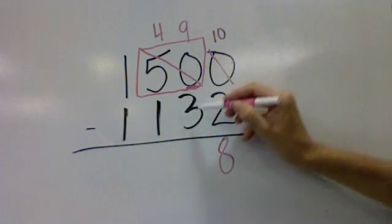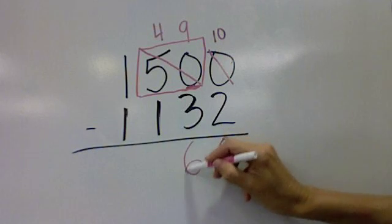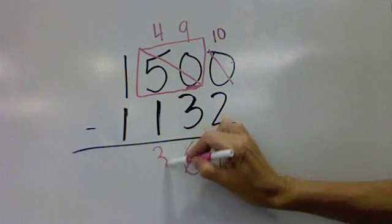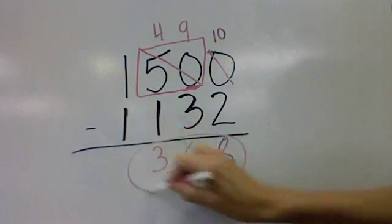Nine minus three is six. Four minus one is three. And one minus one is zero.